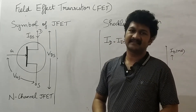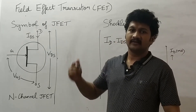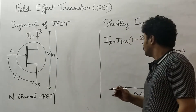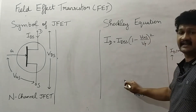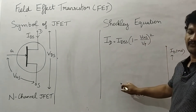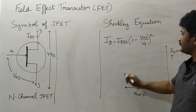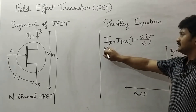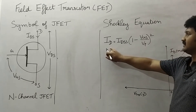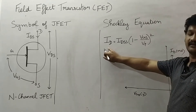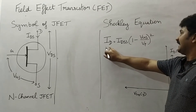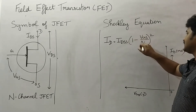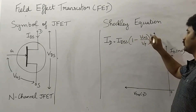Hello everyone, welcome to my channel. In this lecture we are going to study about the transfer characteristics curve of JFET by using the Shockley equation. The Shockley equation finds the drain current Id equal to Idss times (1 minus Vgs by Vp) squared.